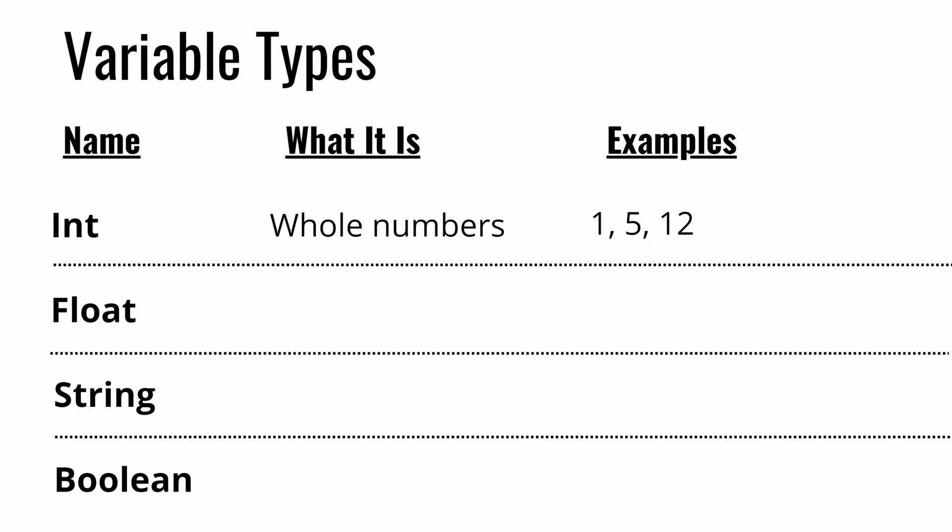Floats represent any number that has a decimal value. Examples of a float would be 5.7, 1.8, and 9.0. If there's a decimal value in the number at all, it's a float. Even if it ends in .0 like 5.0 or 8.0, it is still a float because it contains a decimal.